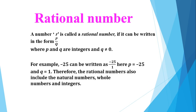For example, minus 25 can be written as minus 25 by 1. Similarly, 4 can be written as 4 by 1, 5 as 5 by 1, and 6 as 6 by 1. We can also write 5 by 2 and 6 by 2 in P by Q form where Q is not equal to 0.